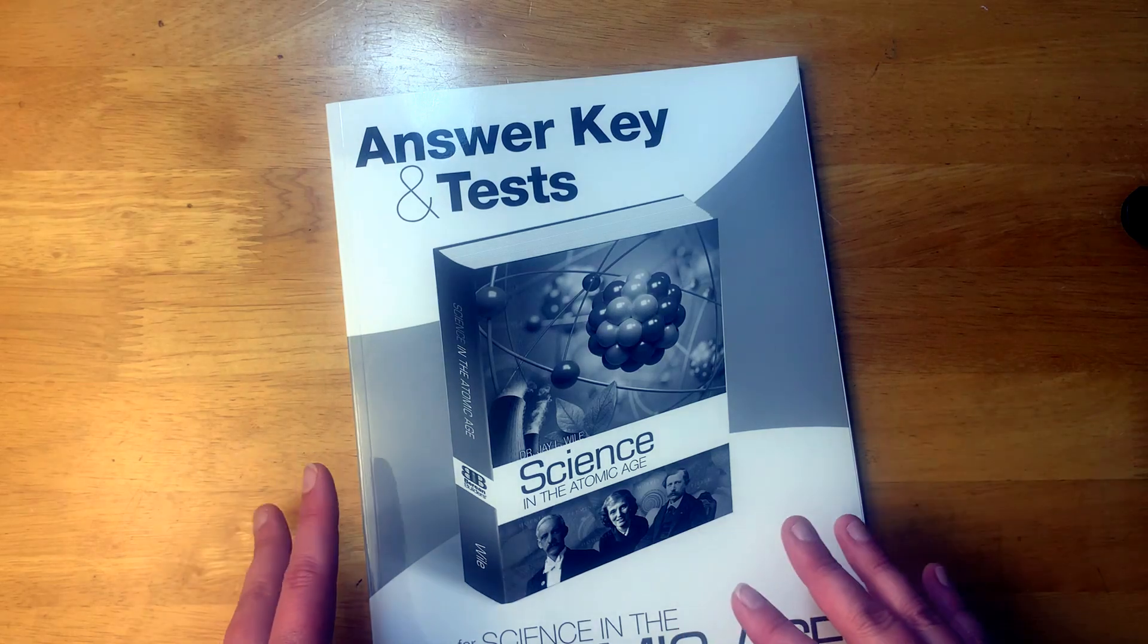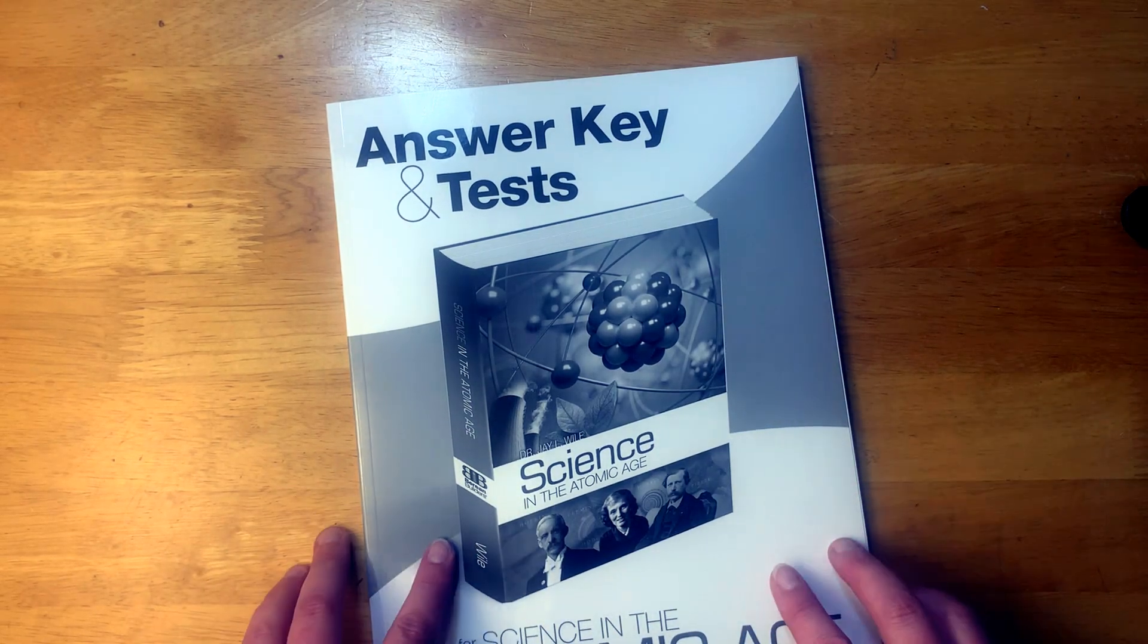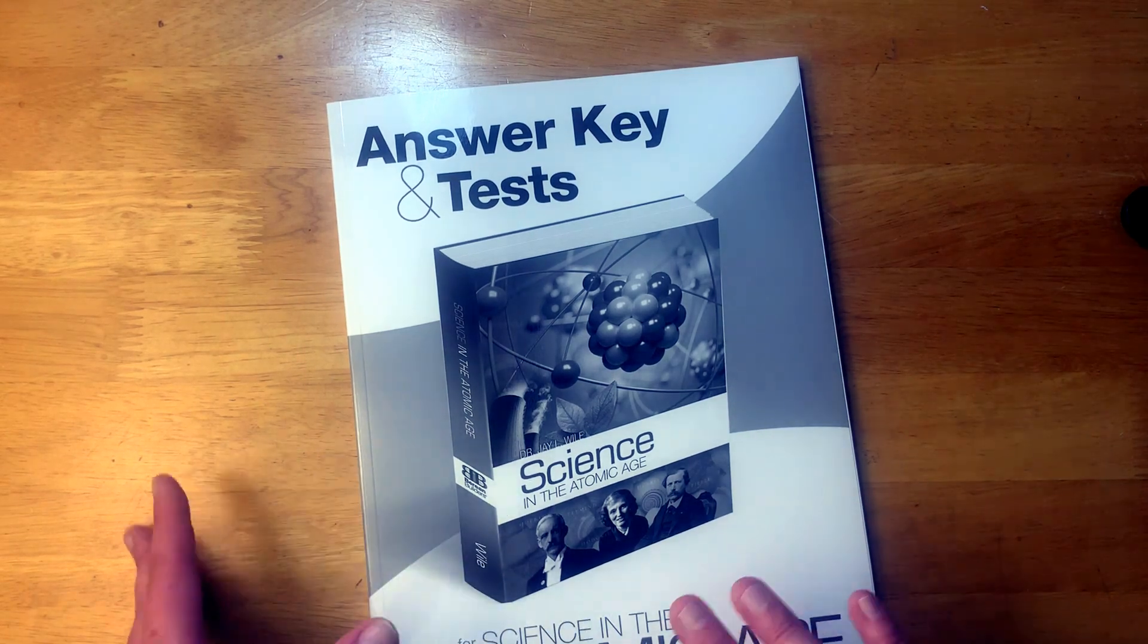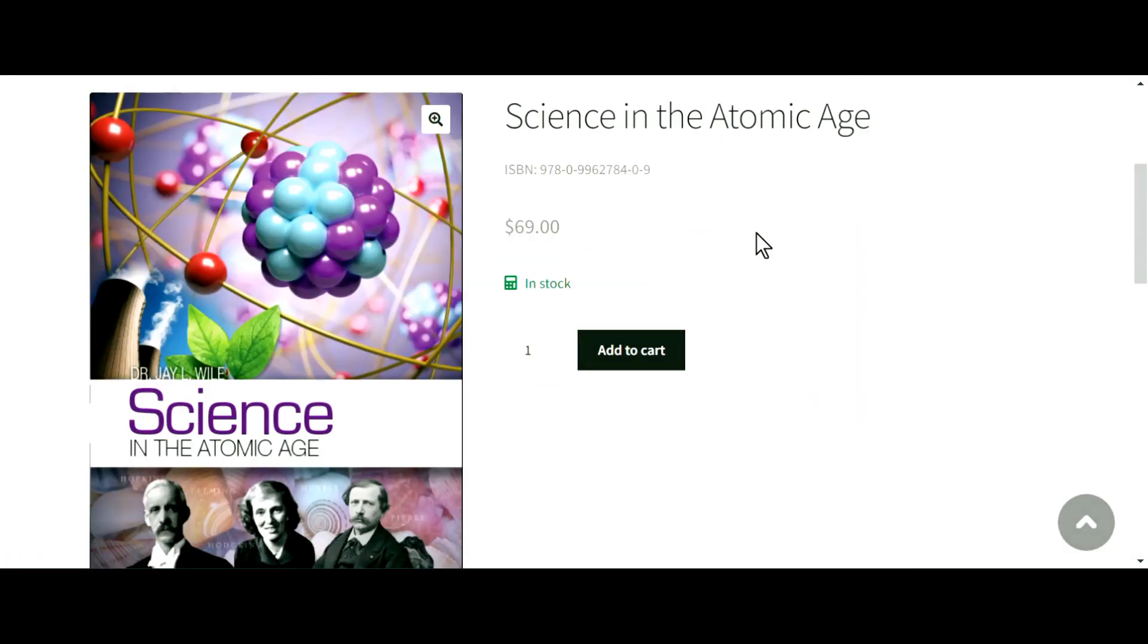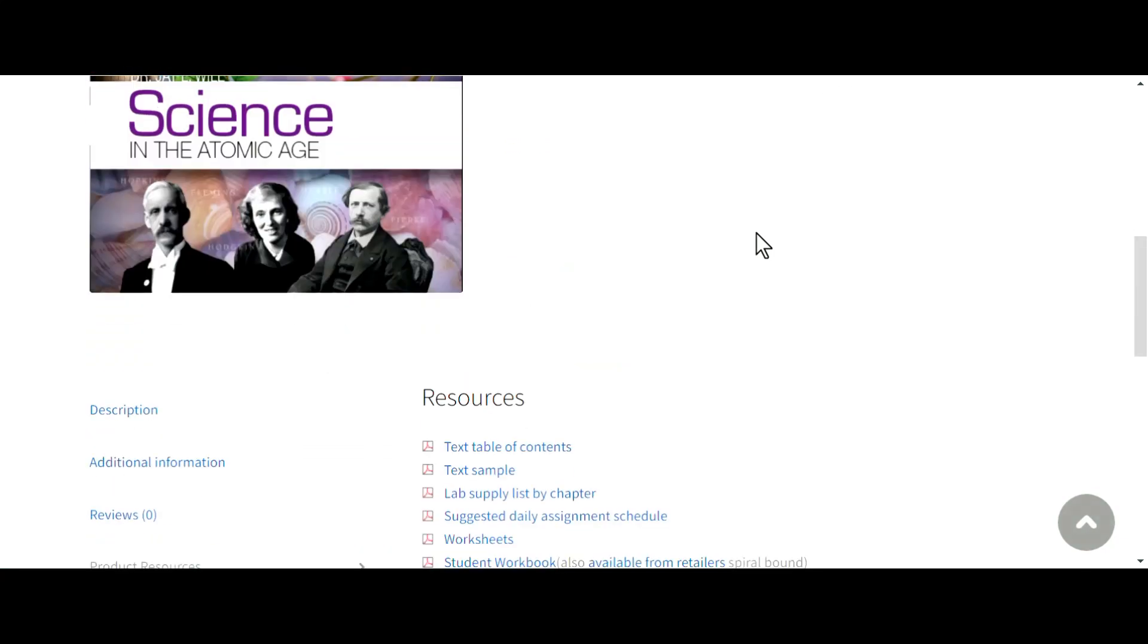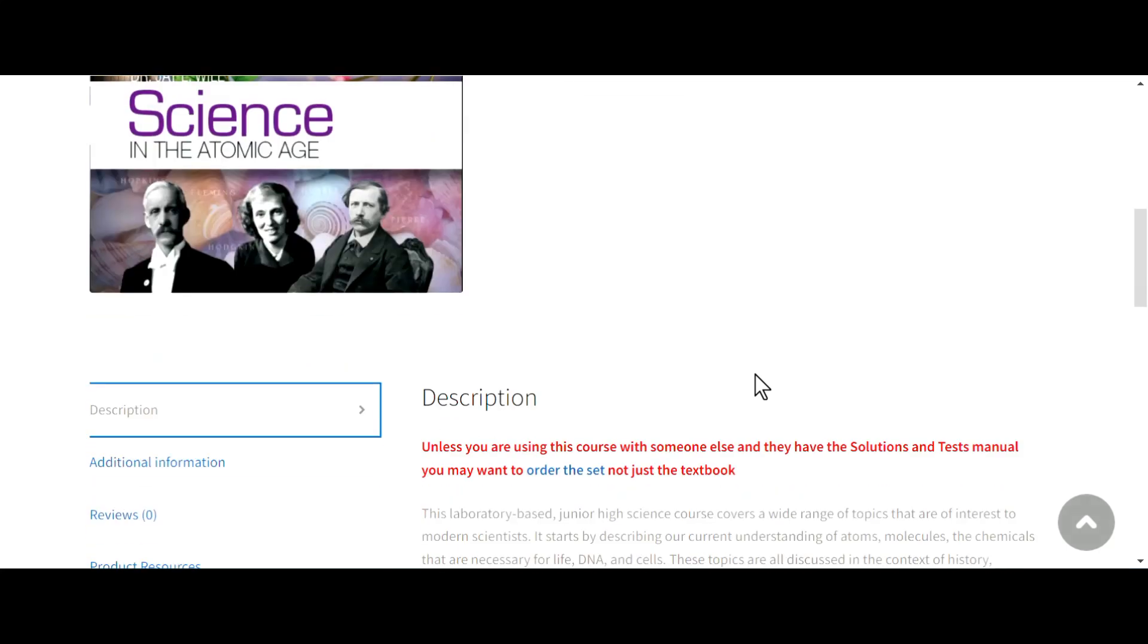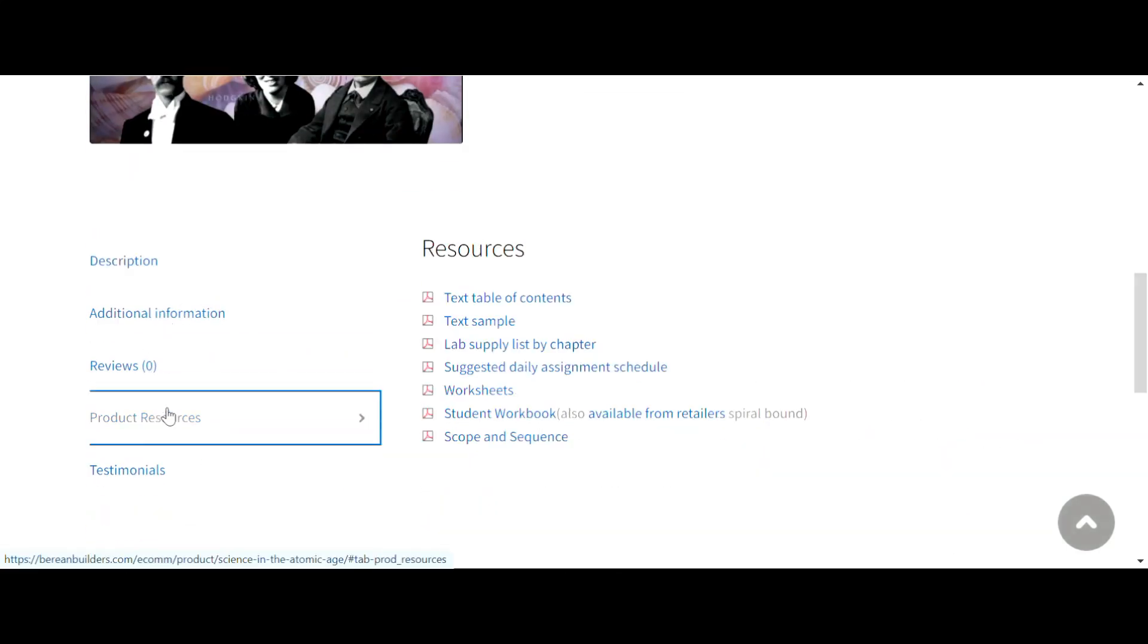Now I'm going to take you onto the computer and just show you the inside of the workbook that you can download, the PDF download. And so you can get a look at what you could get for free or purchase separately. So here I am at Berean Builders site here. And so this is Science in the Atomic Age. I was actually, here's the main page here.